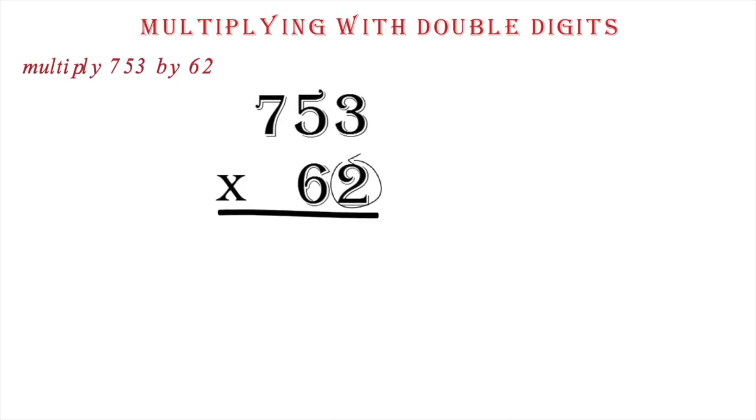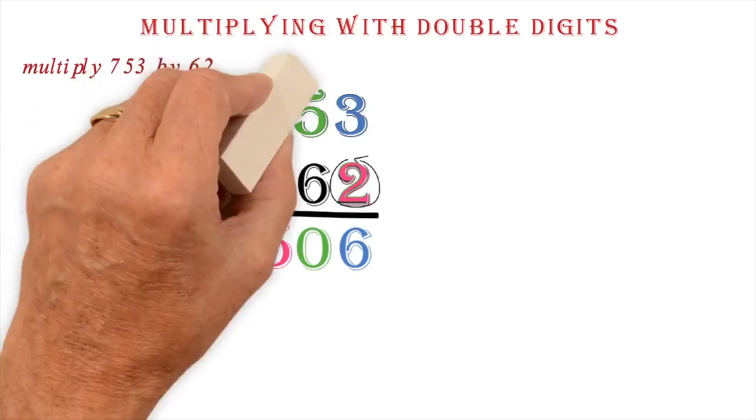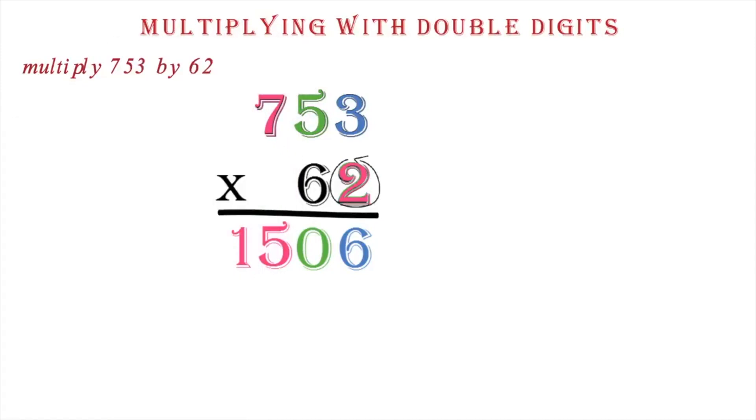Multiplying with double digits. Let's use an example to explain this. We want to multiply 753 by 62. Here again, we align them. We work with the 2 here first. We multiply each digit in the 753 by the 2. So 3 by 2 is 6. Then we do the 5 by 2 to get 10. This is a double digit, so we will keep the 0 and carry the 1. We now multiply the 7 by 2 to get 14. Add the 1 we carried and we have 15. Let me wipe this 1 out so we do not get confused with our next steps.